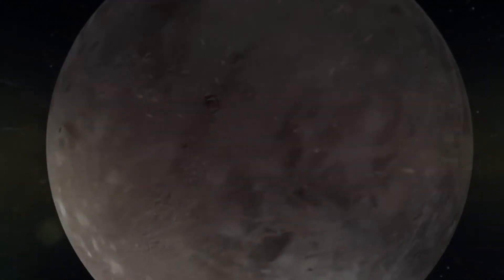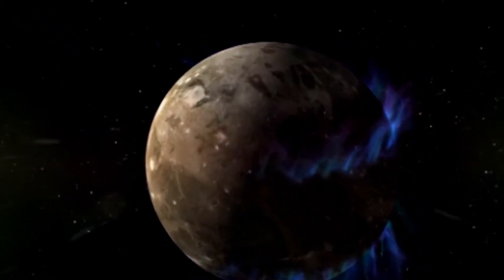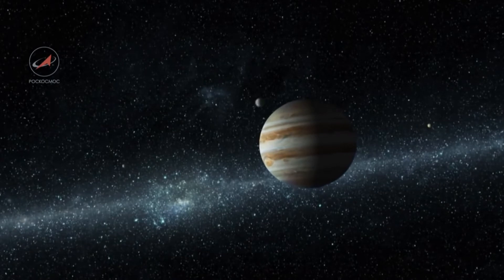There is also a thin layer of atmosphere here, but not sufficient for living organisms, at least known to us, to live on the satellite. In 1995, thanks to the Hubble telescope, scientists were able to detect the presence of a very thin oxygen atmosphere on Ganymede.